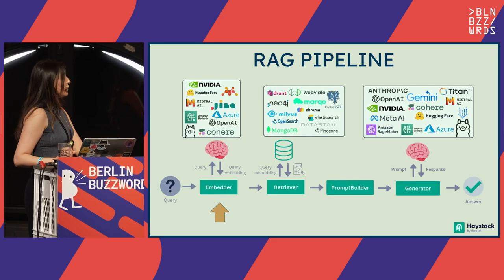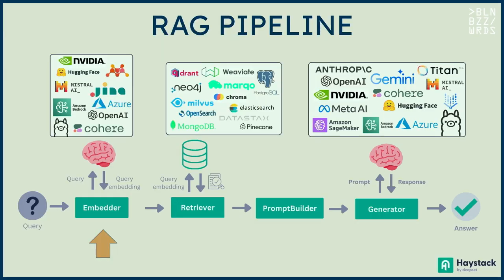This is how the RAG pipeline with Haystack looks like — a very minimal implementation. Every rectangle in this pipeline is basically a component. When I have my query, first I get the embedding component and create a query embedding. To create this embedding, I can use any of the listed models — open source models from Hugging Face such as sentence transformers, GINA models, or if I have models on Azure, I can use those. I can also use OLLAMA.